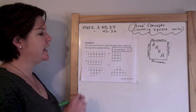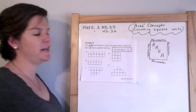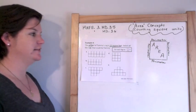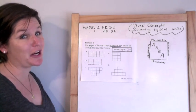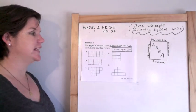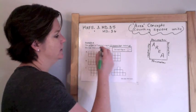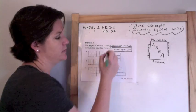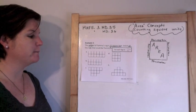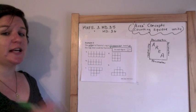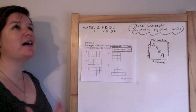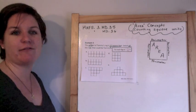This is the last example for this video. Example four: the area of Tammy's rug is ten square feet — good thing they said square because we're talking about area. Select all the rugs that could be Tammy's. This is a multi-select problem, so I need to go through each one and determine if, when I count all the squares, the area is ten square feet.